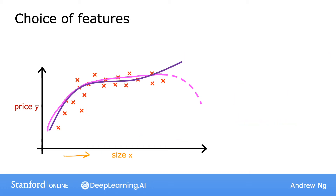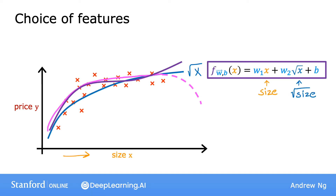Finally, here's one last example of how you really have a wide range of choices of features to use. Another reasonable alternative to taking the size squared and size cubed is to use the square root of x. So your model may look like w1 times x plus w2 times the square root of x plus b. The square root function looks like this and it becomes a bit less steep as x increases, but it doesn't ever completely flatten out and it certainly never ever comes back down.